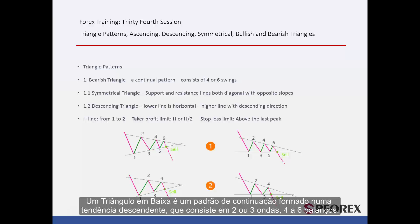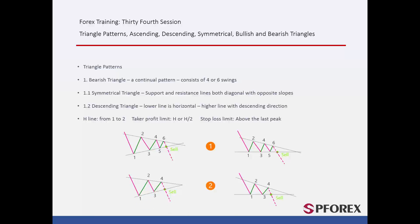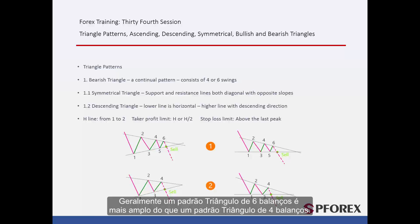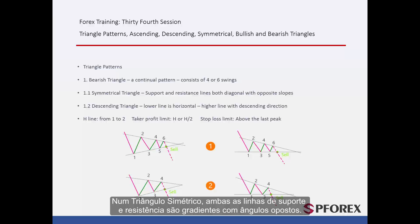A Bearish Triangle is a continuation pattern formed on a downtrend, which consists of 2–3 waves and 4–6 swings. Normally, a 6-swing triangle pattern is wider than a 4-swing triangle pattern. Waves can be surrounded by two lines. The upper line is a support and the lower line is a resistance. In a symmetrical triangle, both support and resistance lines are gradient with opposite angles.